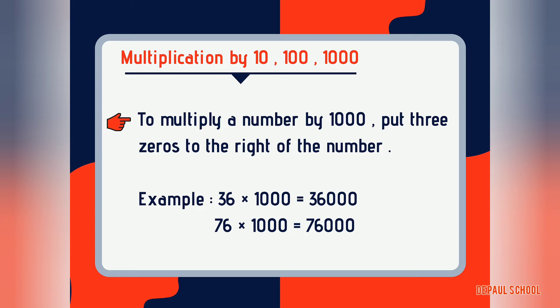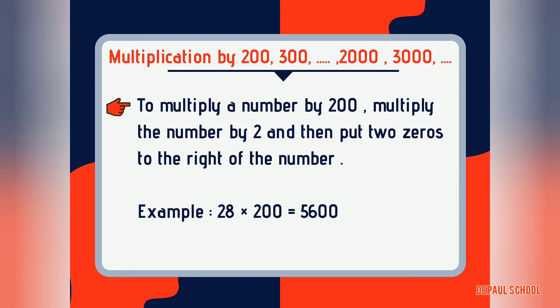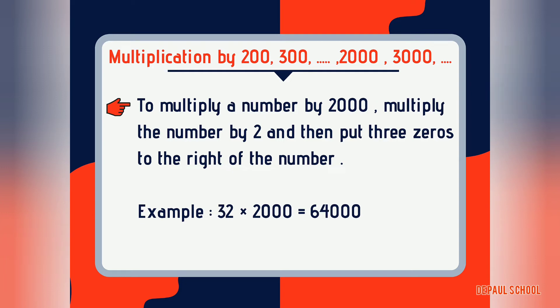Now, what do we do when multiplying by 200, 300, 2000, 3000, and so on? When multiplying by 200, we multiply the number by 2 and put two zeros to the right. For example, 28 multiplied by 200 gives 5600 — we multiplied 28 by 2 first, then added two zeros. When multiplying by 2000, we multiply by 2 and put three zeros to the right. For example, 32 multiplied by 2000: first multiply 32 by 2 to get 64, then add three zeros, giving 64,000.